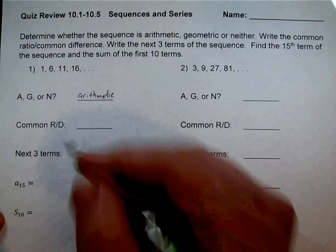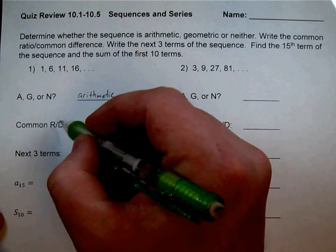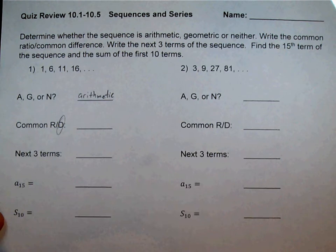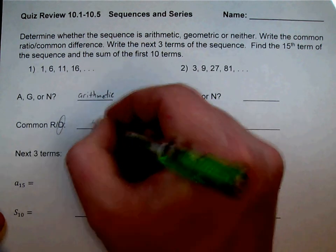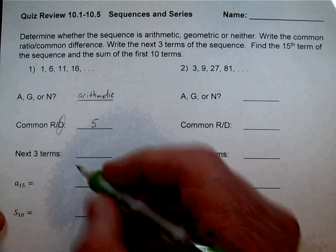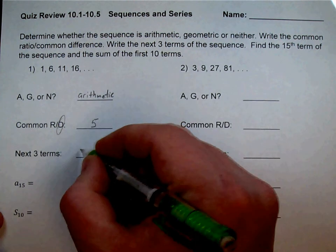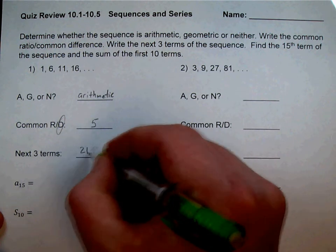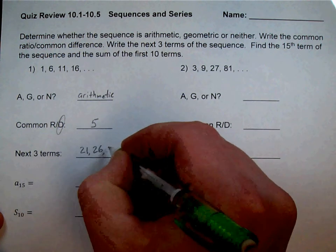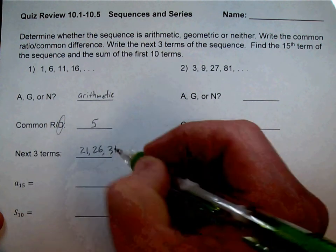So if it's arithmetic, we have a common difference, not a ratio. That common difference was 5 — we were going up 5. So the next three terms after 16: if you add 5, you get 21, then 26, then 31.